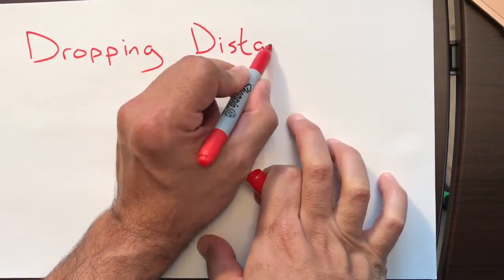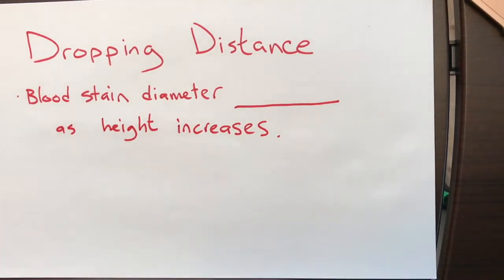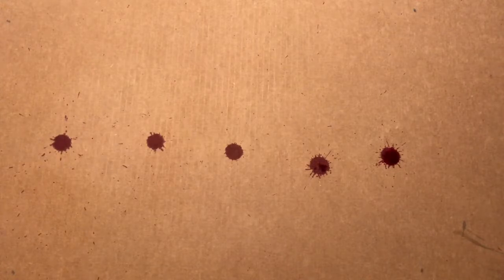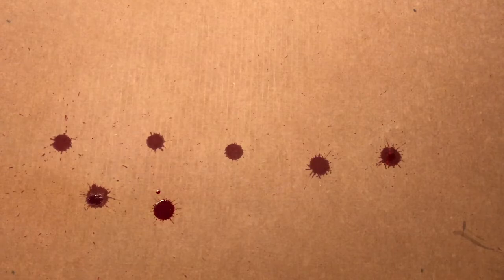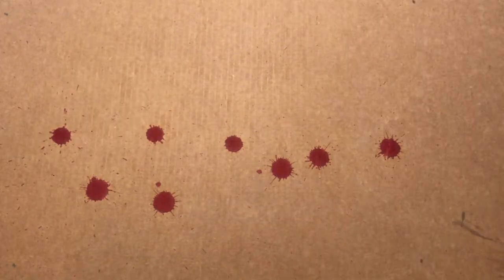What about dropping distance? As blood droplets fall further and further from the ground, does the diameter increase or decrease? Let's take a look. Drops were released from one foot through eight feet high. Even without measuring, you can see that the diameter is actually increasing.